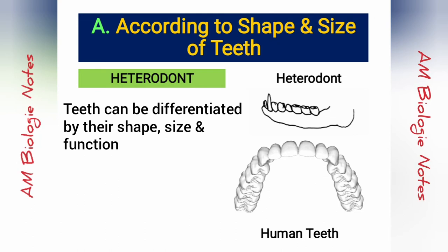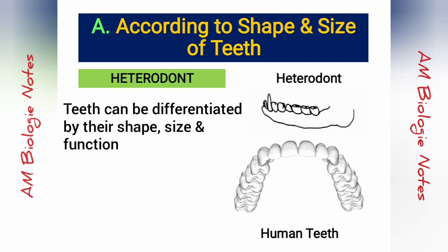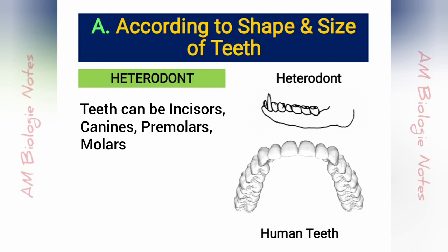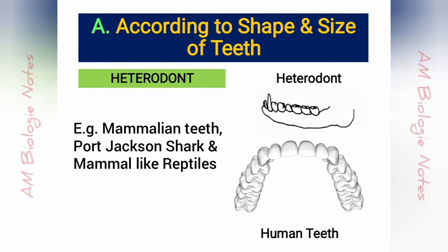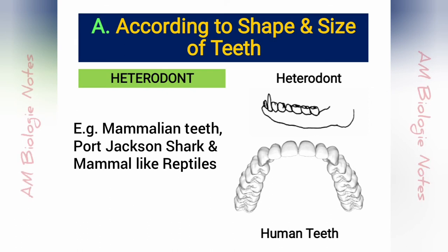Heterodont: This condition is the usual feature in mammals. Here, the teeth are distinguished by their shape, size, and function. They are distinguished into several types known as incisors, canines, premolars, and molars. This differentiation depends upon the nature of food eaten and the manner of securing it. Except in mammals, heterodont condition is found in Port Jackson shark, mammal-like reptiles, etc.